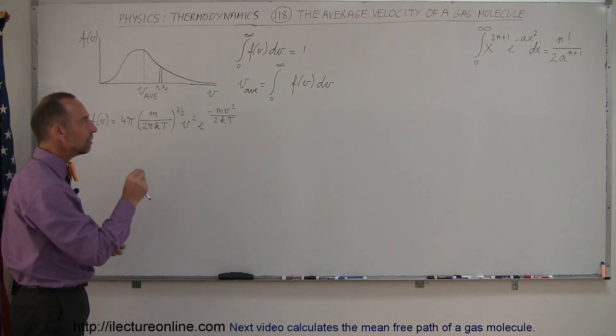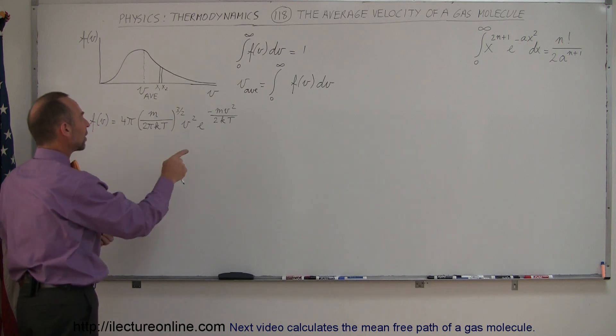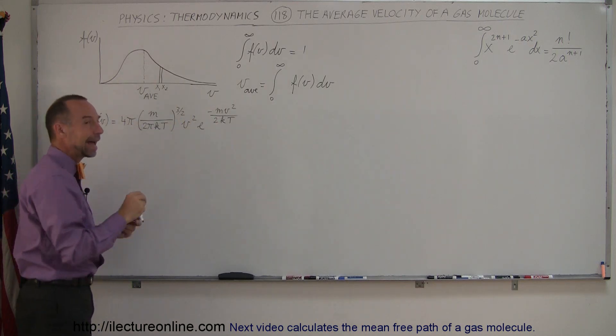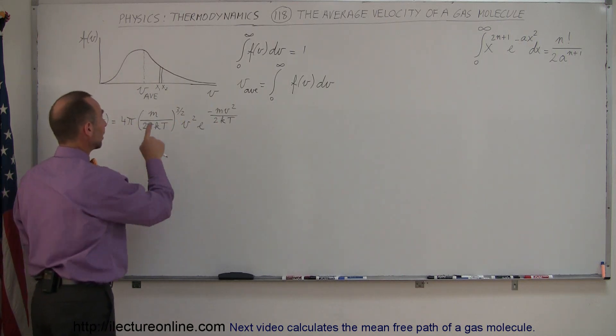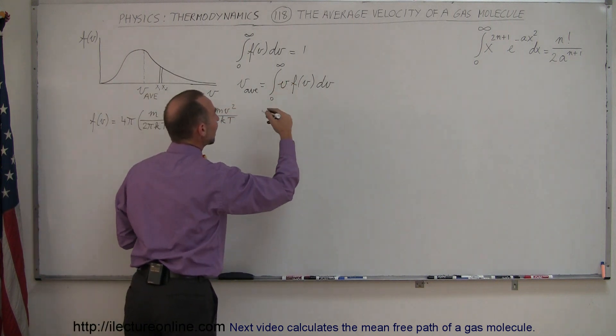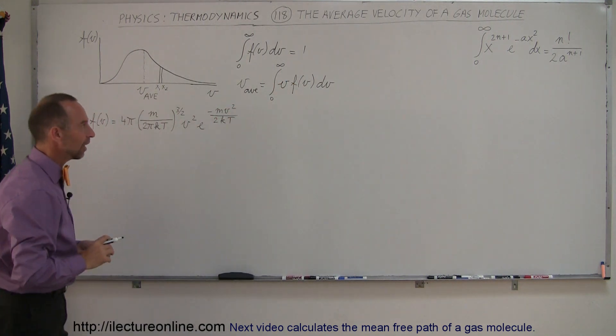If we then multiply each of those molecules by its corresponding velocity and integrate that, I get the average velocity. So then I have to multiply this times V, and now I can go ahead and get the average velocity.